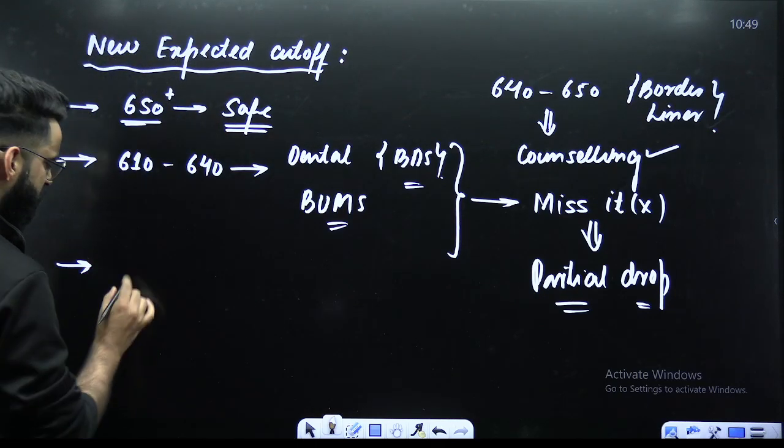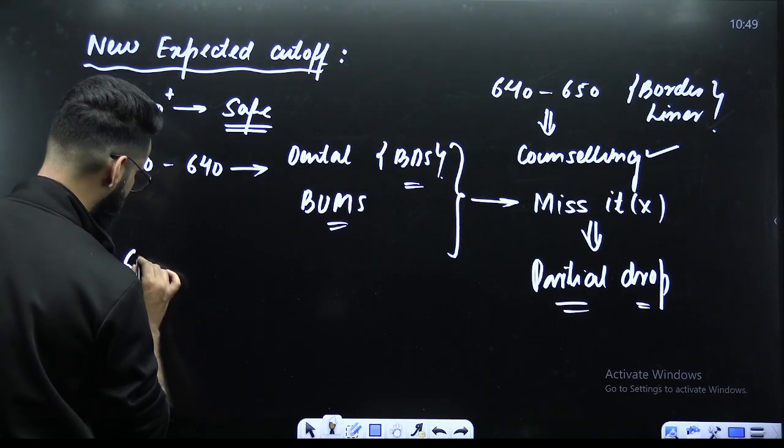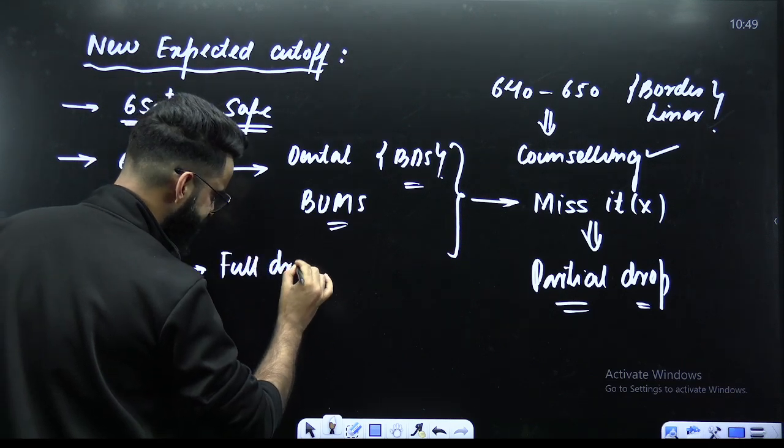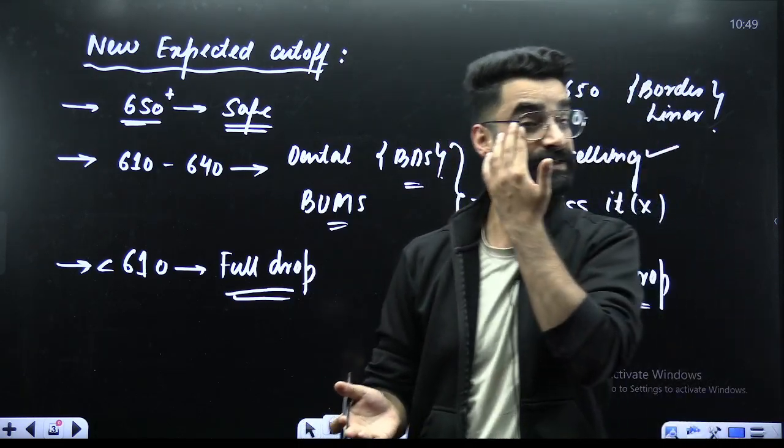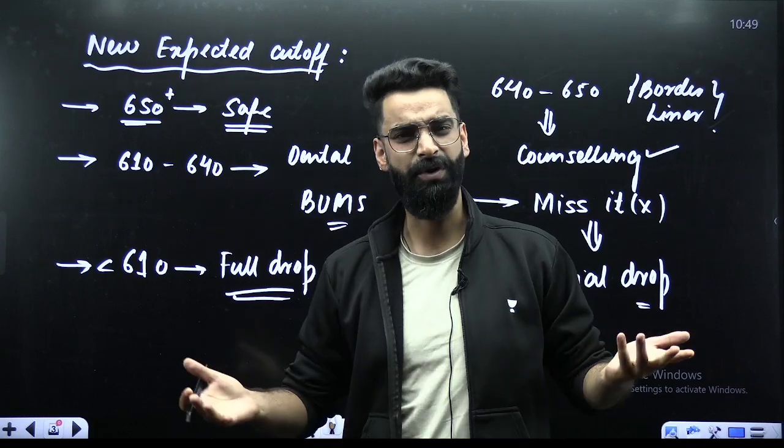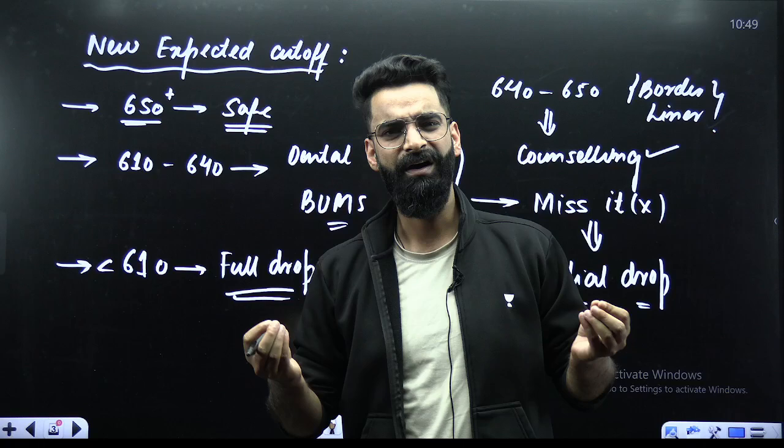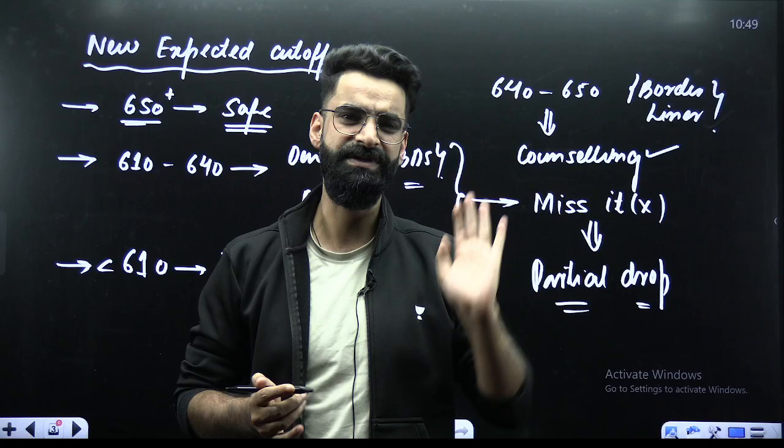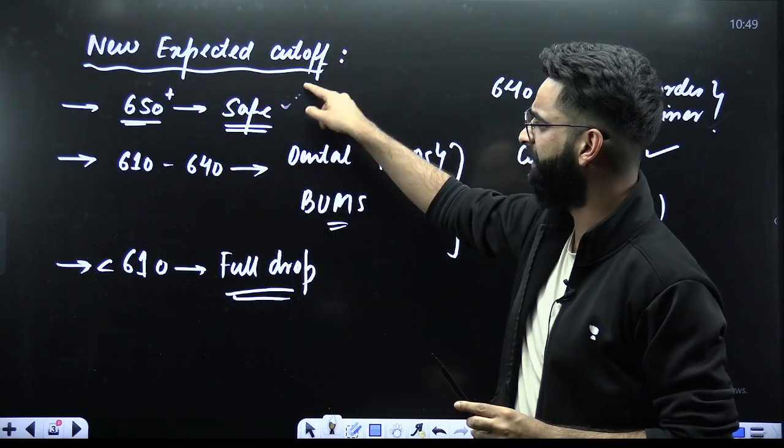And all those students who are scoring less than 610, my dear students, you need to go for the full drop. You need to go for the full drop, one year complete drop. It's now not one year complete drop, it is nine months drop. But nine months are still enough to crack this particular examination with a good score. If you have scored 400 also in nine months, you can scale it up to 650 plus. If you scored 500 also, that is very strong. There are very strong chances you can scale it up from 500 to 690, for sure.